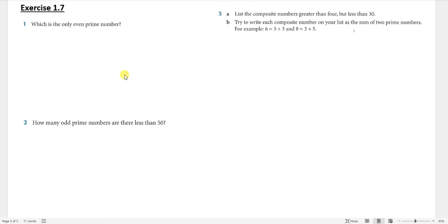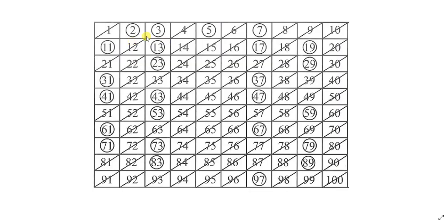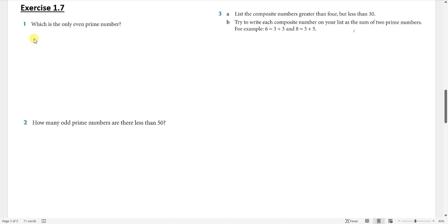Let's start with exercise 1.7. Question 1: which is the only even prime number? The only even prime number is 2, and the remaining prime numbers are odd. So we simply write the answer as 2.